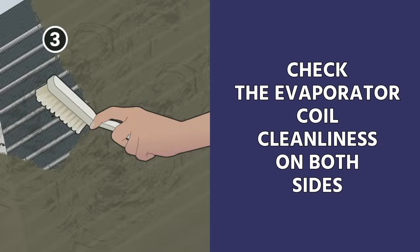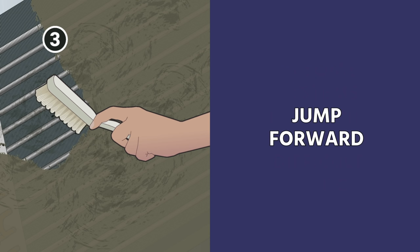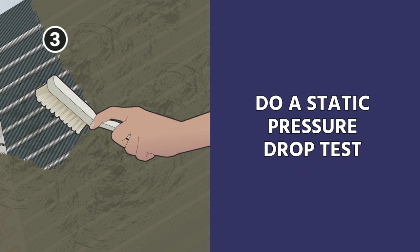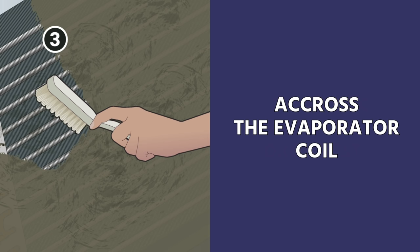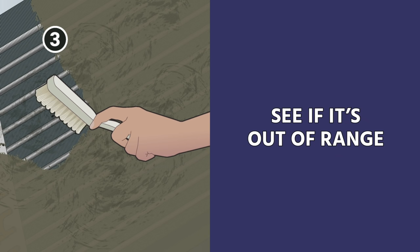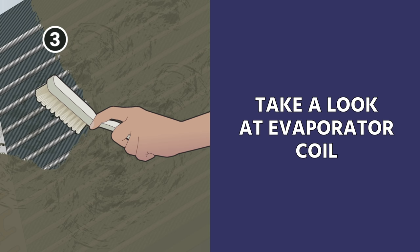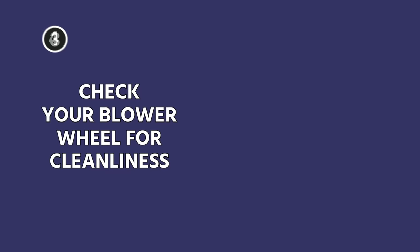Next, check the evaporator coil cleanliness on both sides. In some systems this can be very difficult to do. If it is very difficult, you can jump forward and do a static pressure drop test across the evaporator coil — that's easier — and look at the manufacturer specifications to see if it's out of range. For most of us, though, it's going to be just as easy to take a look at that evaporator coil and see if it is visibly dirty.